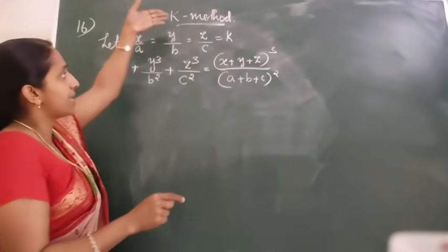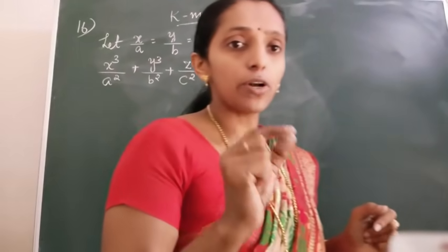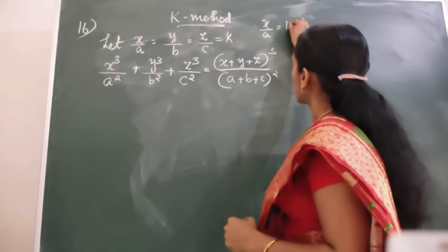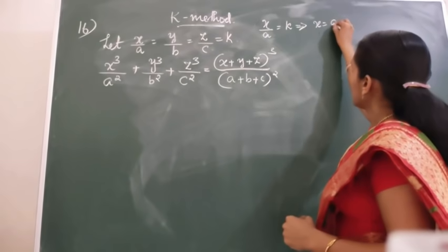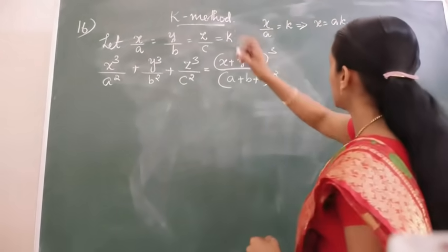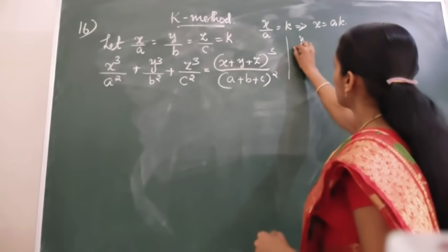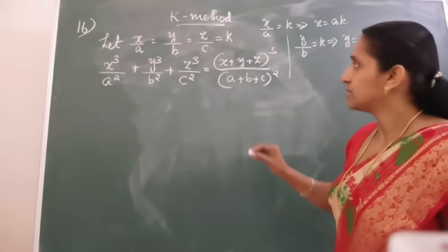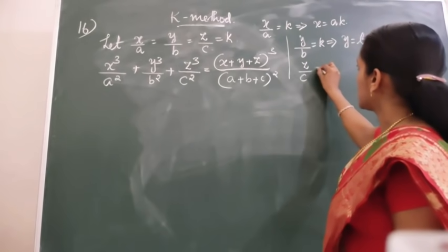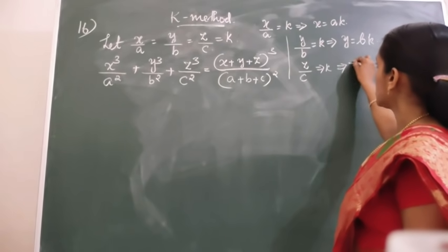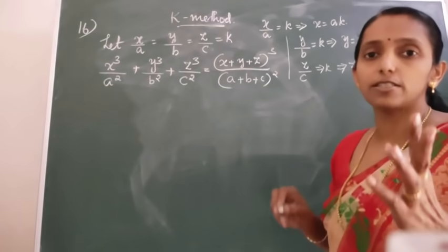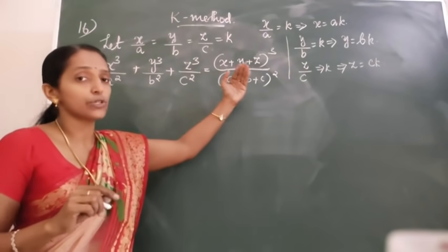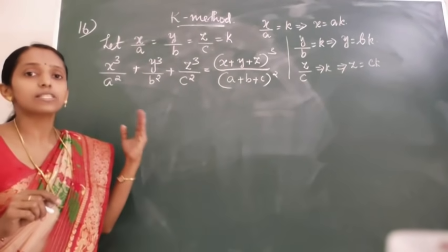If you are equating X upon A equal to K, then X will be equal to AK. Similarly, if you are equating Y upon B equal to K, that implies Y will be equal to BK. And Z upon C equated gives Z equal to CK. So we got three values: X equals AK, Y equals BK, and Z equals CK.